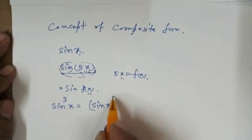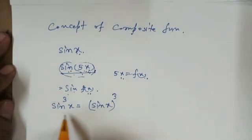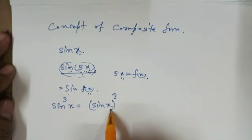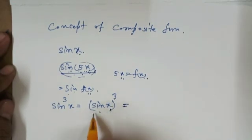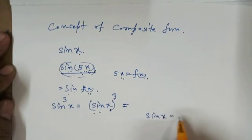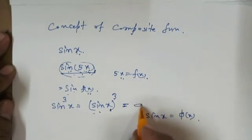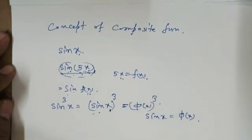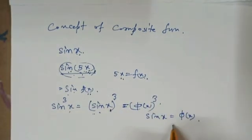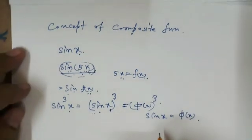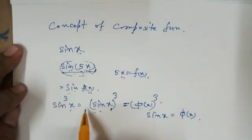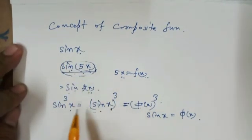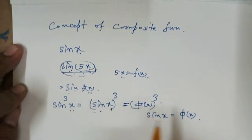Another example: sin³x means (sin x)³. Here sin(x) is a function of x, and (sin x)³ is a function of sin x. So sin³x is a mixture of two functions — sin x and (sin x)³. Observe that these two composite functions, sin(5x) and sin³x, are ultimately functions of x.